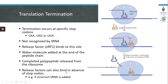Interestingly, release factors have also been shown to bind in the absence of a stop codon. These release factors may bind to the A site if an incorrect tRNA has been incorporated at the P site. Therefore, ribosomes also have a certain amount of proofreading capability due to the presence of the release factor.